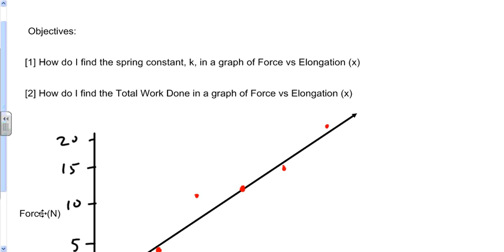How do I find the spring constant, that's k, in a graph of force versus elongation? And how do I find the total work done in a graph of force versus elongation?